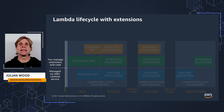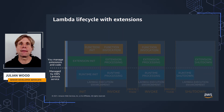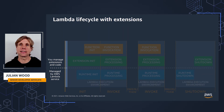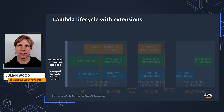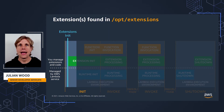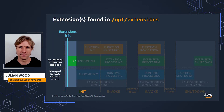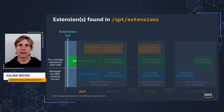Lambda creates the execution environment with the configured resource. It either downloads the files for a zip archive function and then adds the Lambda layer files which contain the extensions, or for a function packaged as a container image, it builds the execution environment from the image, which includes the extension files as part of the image. Lambda searches the /opt/extensions folder for any external extensions, preferably as a self-contained compiled binary to be portable. If Lambda finds any extensions, it runs the extension files it finds. They need to be executable to run, or Lambda logs a permission denied error.